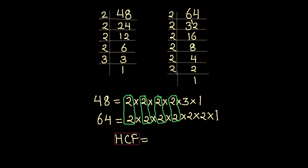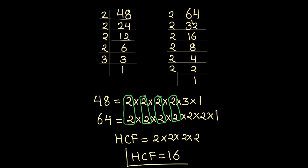For finding the HCF, we are going to take the product of all the common factors. So HCF will be 2 times 2 times 2 times 2. Make sure that you write the common factor only once. So HCF equals 2 times 2 is 4, 4 times 2 is 8, 8 times 2 is 16. So the HCF of 48 and 64 is 16.